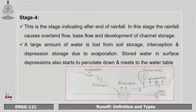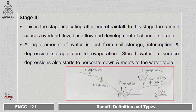Stage 4 indicates the condition after the end of rainfall. In this stage, rainfall has caused overland flow, base flow, and development of channel storage. A large amount of water is lost from soil storage, interception, and depression storage due to evaporation. Stored water in surface depressions also starts to percolate down and meets the water table. Infiltration and evaporation are both present because it is the end of the rainy season.